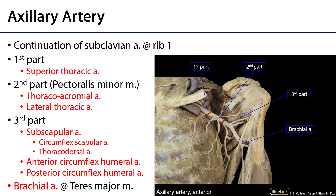The first part of the axillary artery has one branch called the superior thoracic artery. The superior thoracic artery supplies serratus anterior — you can see some of the slips of serratus anterior — as well as the first two intercostal spaces with blood.